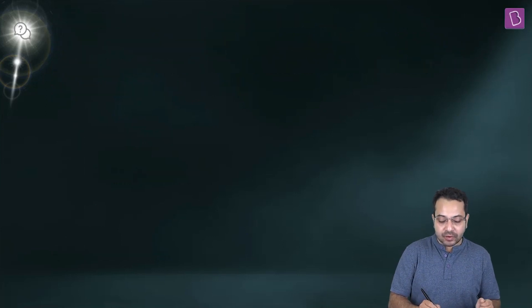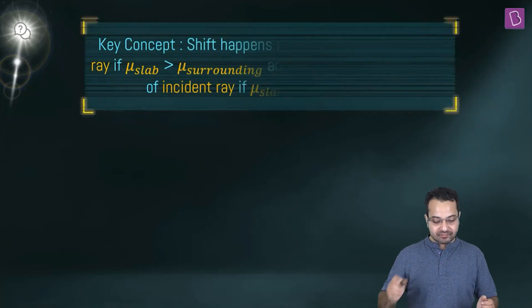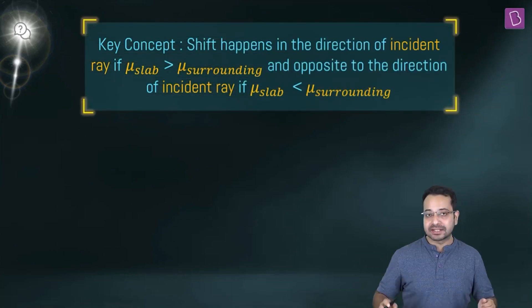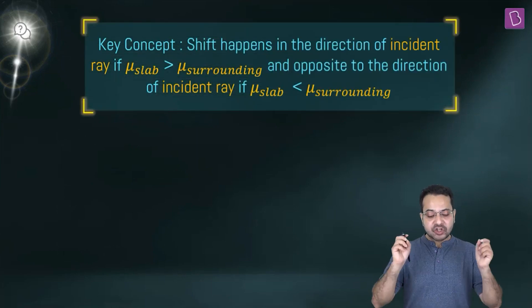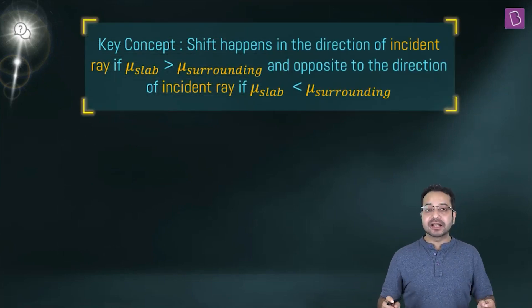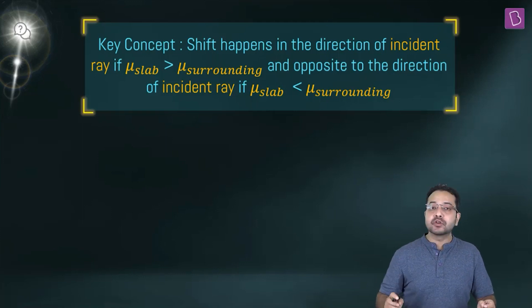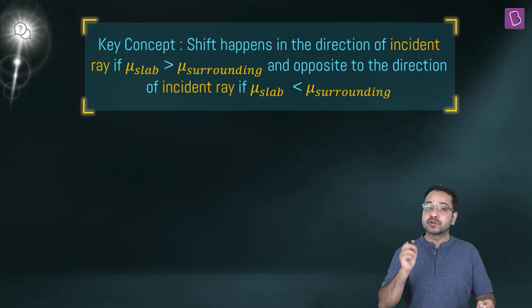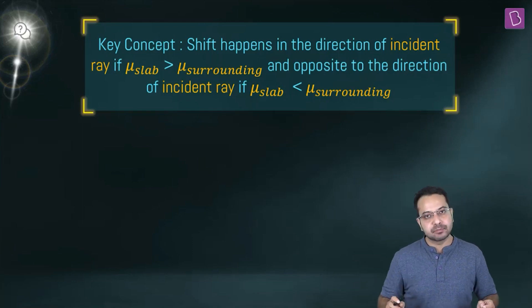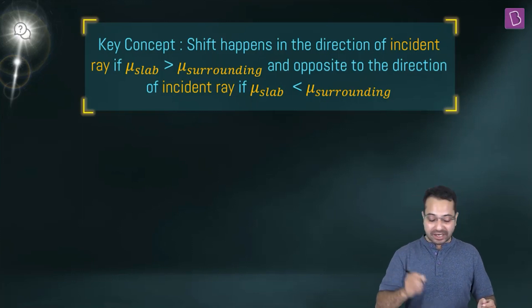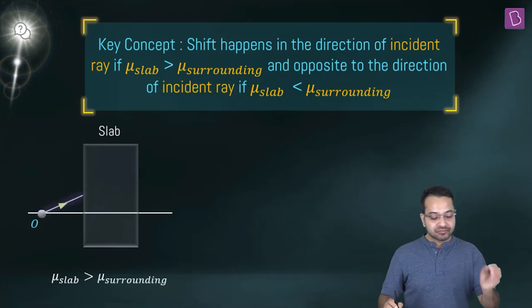Let's try to understand the key concept here. The shift happens in the direction of the incident ray if mu of the slab is greater than mu of the surrounding, and opposite to the direction of the incident ray if mu of the slab is less than mu of the surrounding.